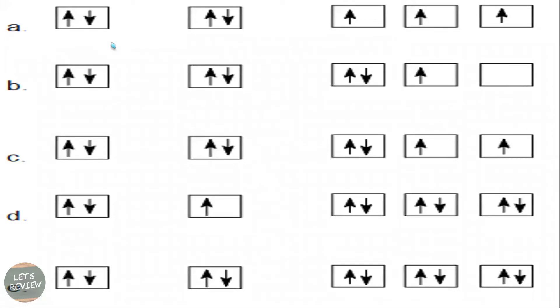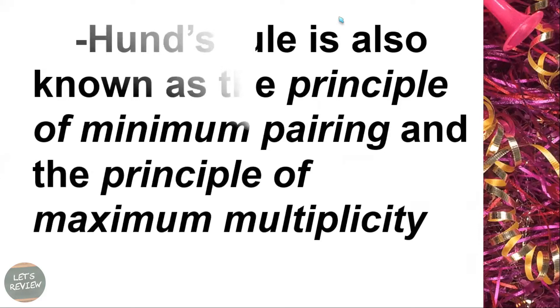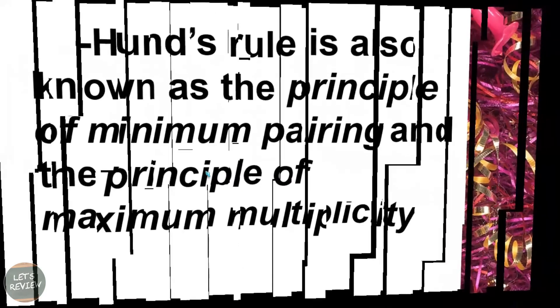So look at these examples here. Like what I said, if we're going to see the correct way on how to do it, letter A is correct, as well as letter C, and letter E. Why is it B and D is not correct? Remember that you have to put the spin here before you put it on the first, second, and third. You have to make them occupy all the boxes first. Same thing with letter D. It should be paired. So Hund's rule is also known as the principle of minimum pairing and the principle of maximum multiplicity. That's the meaning of Hund's rule.